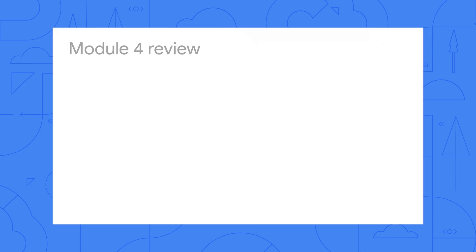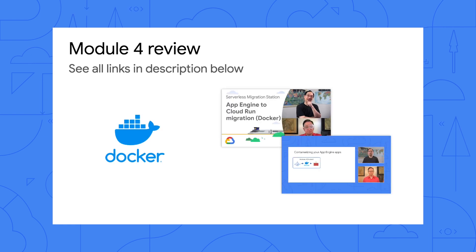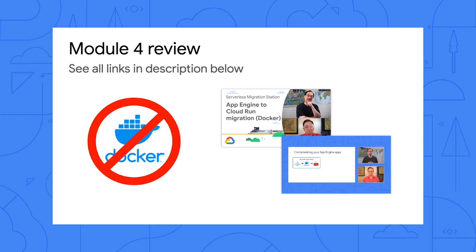Good to be here again, Wes. You showed us how to containerize our app for Cloud Run last time. Why are we doing it again today? Well, I'm glad you asked, Martin. In the module 4 video, we did show developers how to use Docker to containerize our App Engine apps for Cloud Run. Check it out if you missed it. Containerizing your App Engine app for Cloud Run is still on the to-do list today, but this time we'll do it without needing to know about Docker, Dockerfiles, or how containers are put together.